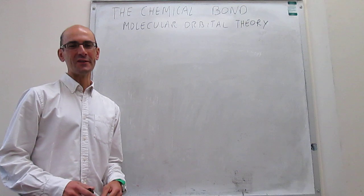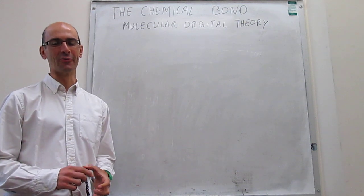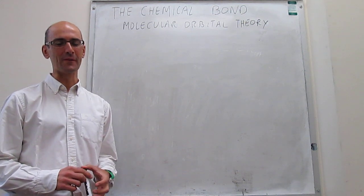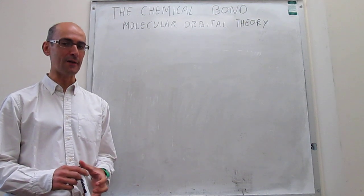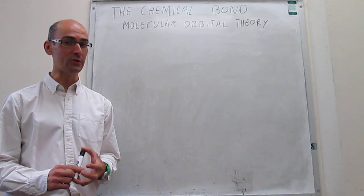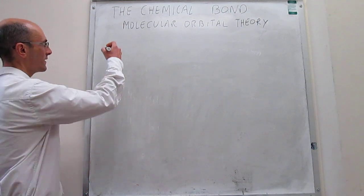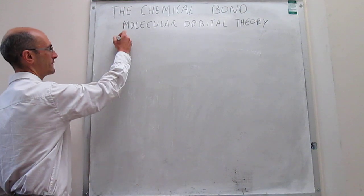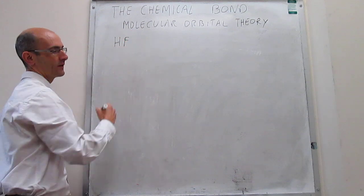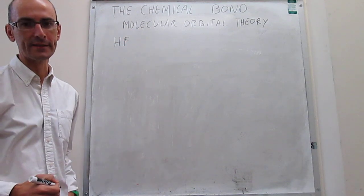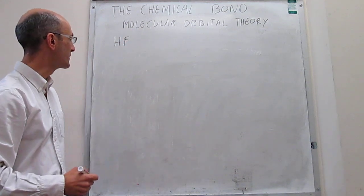In this video we continue to learn concepts in molecular orbital theory by explaining non-bonding orbitals. We're going to think about the HF molecule and see if we can draw a molecular orbital diagram for that molecule.